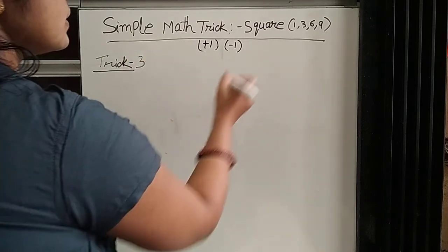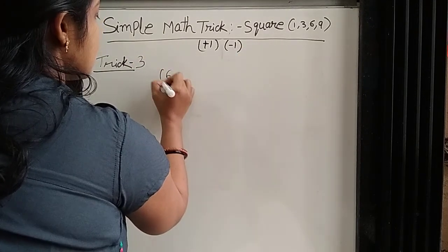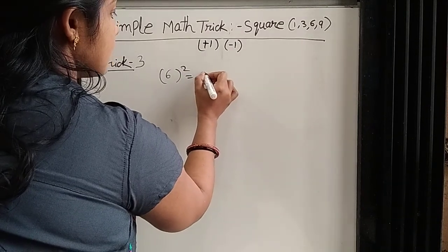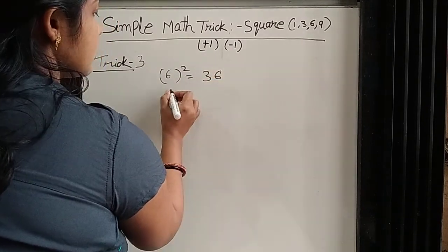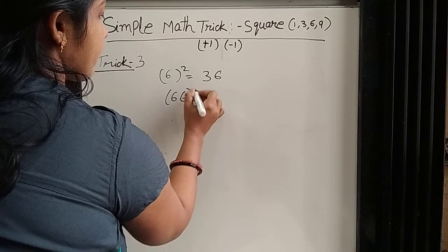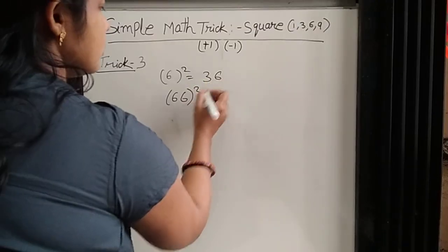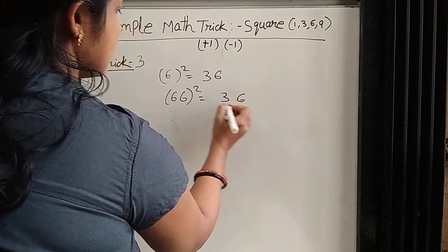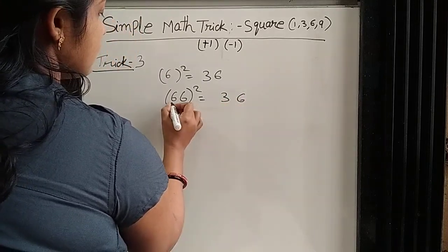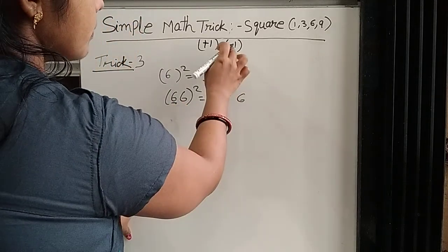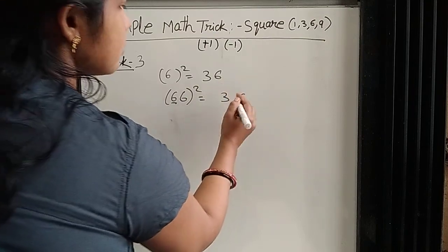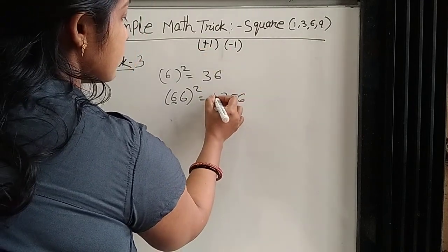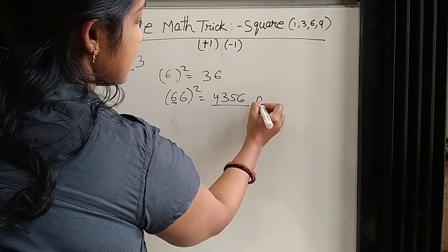Trick number 3 is 6. 6 square — everyone knows 6 square is 36. Suppose 2 6: 6 square is 36, rest is 1 6. So minus 1: 6 minus 1 is 5, and 3 plus 1 is 4. This is the answer.